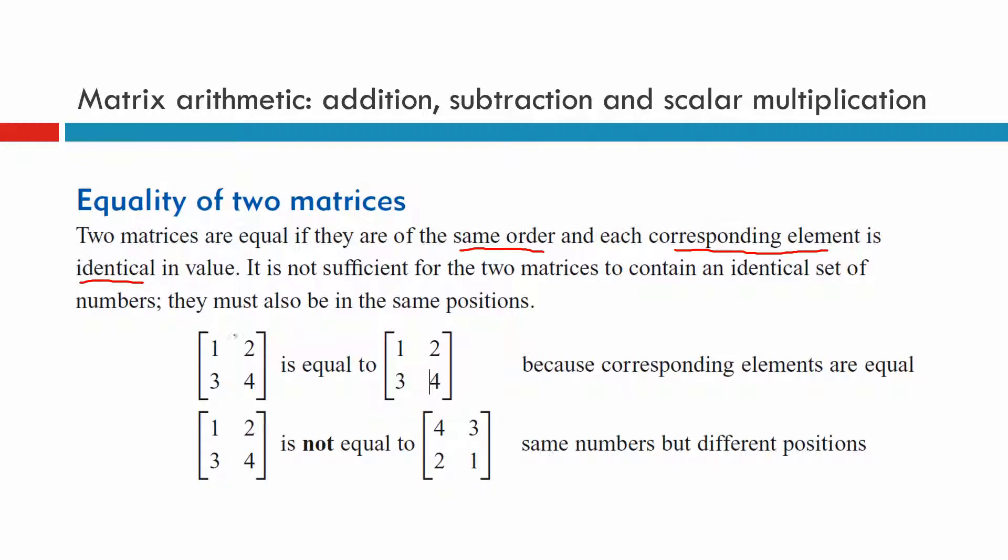Underneath you've got two matrices, 1, 2, 3, 4 is that matrix, it's exactly the same as the one right next to it, 1, 2, 3, 4. These are equal matrices.